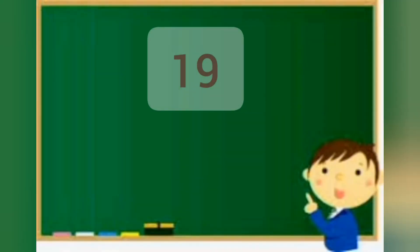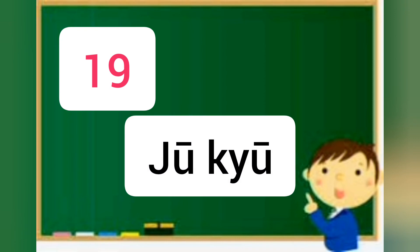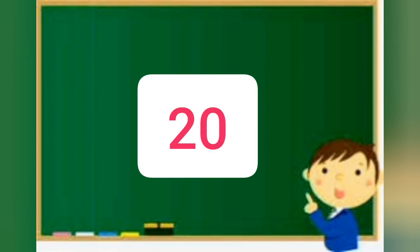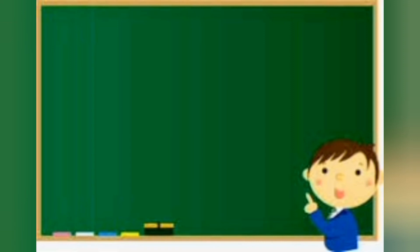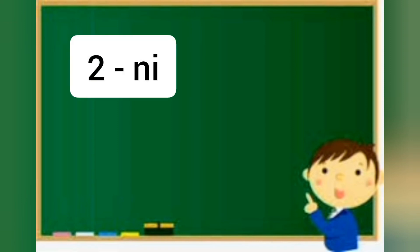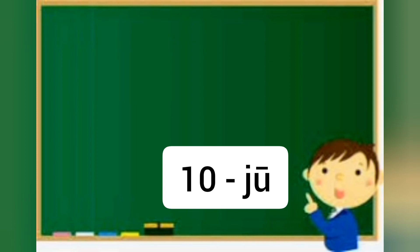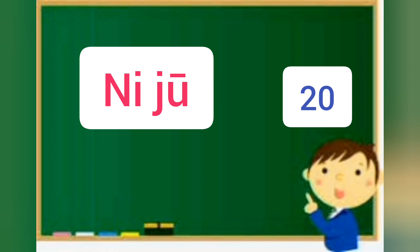Number 19 in Japanese is ju-kyu. Ju-kyu. Next is number 20 in Japanese. Number 20 forms as 2 times 10. Number 2 we call ni, and number 10 we call ju. Say together: ni-ju, ni-ju. Number 20 is ni-ju. I think now you got the point.